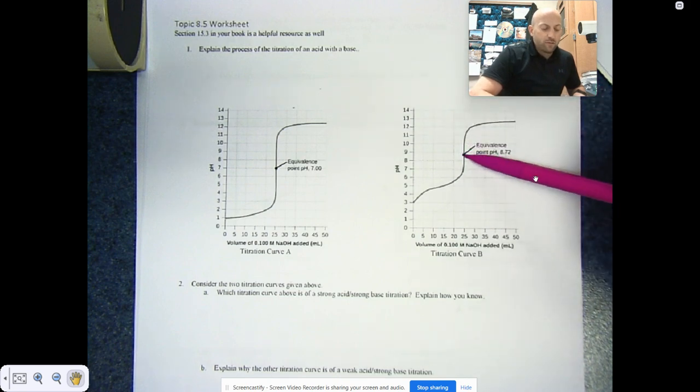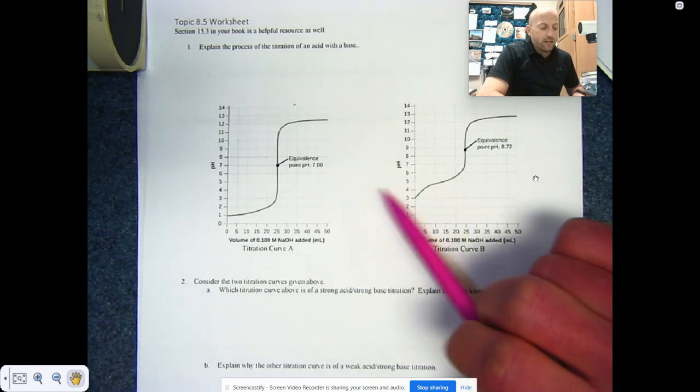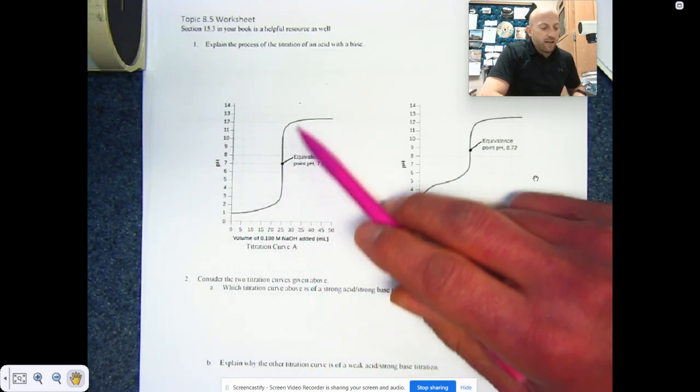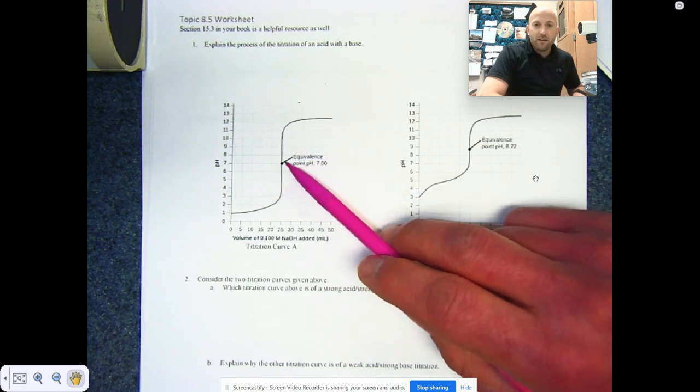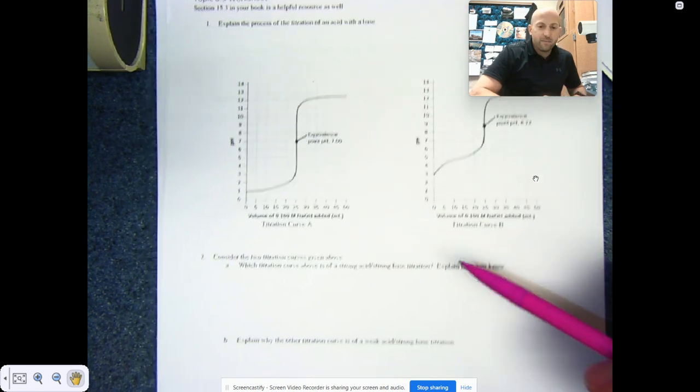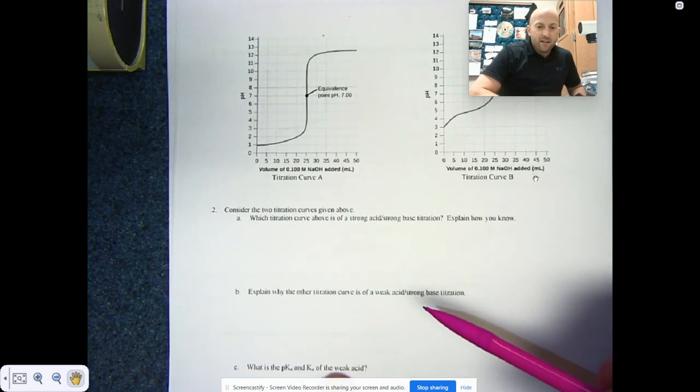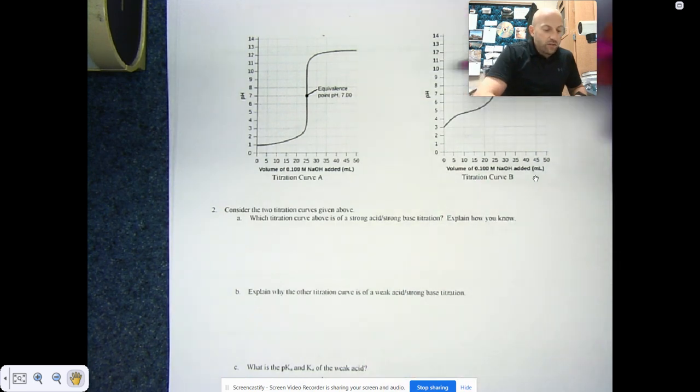If we remember from our equivalence point discussion, what we're saying with this is at the equivalence point we end up having more conjugate base and a stronger conjugate base with a weak acid. And then with the strong acid and the strong base, those completely cancel each other out and all you have here is water and salt. So that's something to keep in mind.